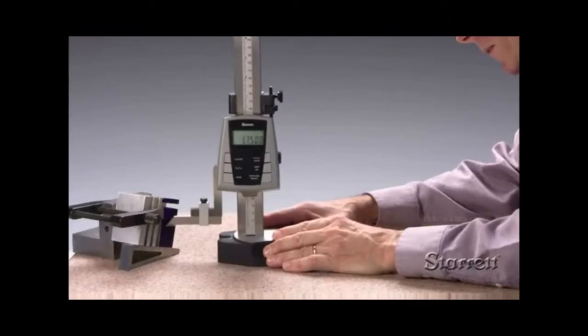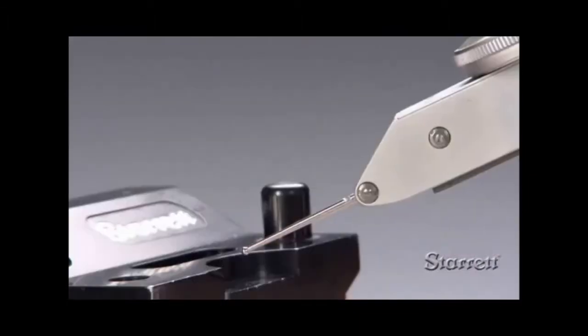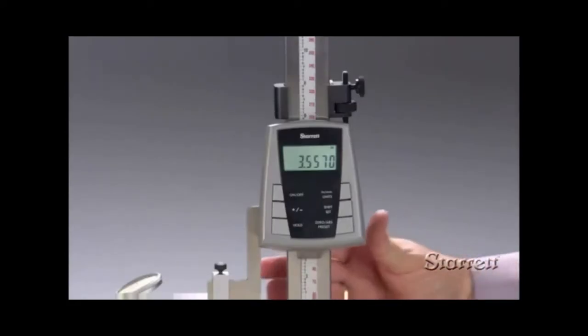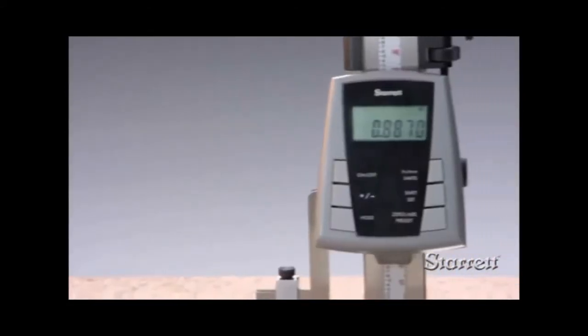Ideal for marking a vertical line from a reference surface, inspecting feature height and a variety of other applications. The 3752 has an easy-to-read 3/8 inch display and a large multi-function keypad with functions including direction change.